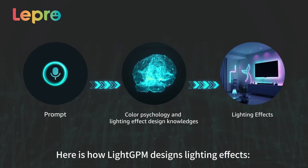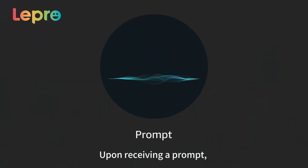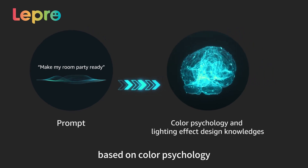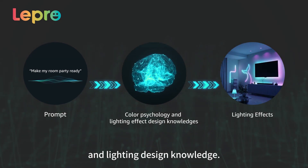Here is how LightGPM designs lighting effects. Upon receiving a prompt, the AI generates lighting effects based on color psychology and lighting design knowledge.